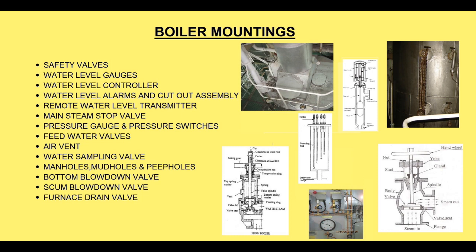Boiler safety valves: these are fitted to protect the boiler against overpressure. They are fitted in pairs on the steam drum and designed to open at a designed blow-off pressure. For boilers with superheaters, one more safety valve must be fitted to the superheater outlet header. Main steam stop valves are fitted to isolate the main steam supply line, usually of non-return type. Feed check valves allow feed water to enter the boiler and prevent back flow of water in the event of feed water pump failure. Water level indicators are required to see the water level of the boiler.